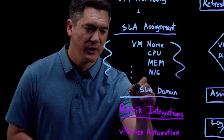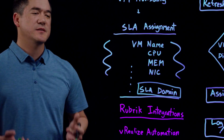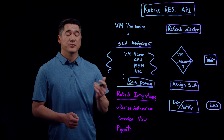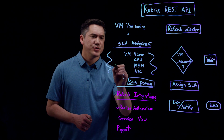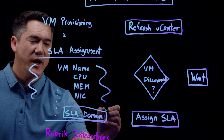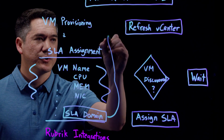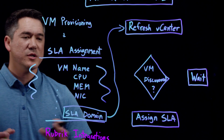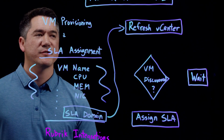What we can do is add a drop-down that specifies an SLA domain option. This drop-down can be populated with a REST API call out to Rubrik, basically getting all the SLA domains available. Once the user chooses a VM name, CPU, all of the options including the SLA domain, we can pass these parameters onto an actual workflow. So once we know the name and SLA domain, this can be passed to a refresh vCenter call.